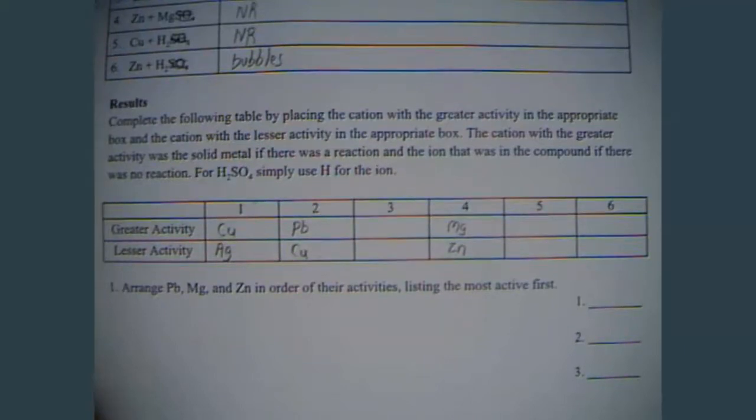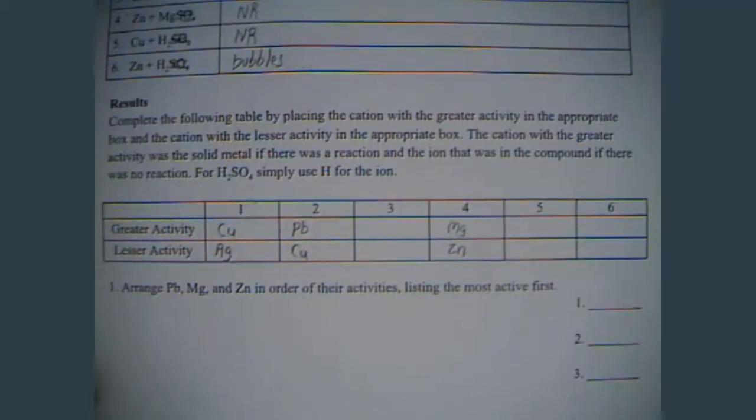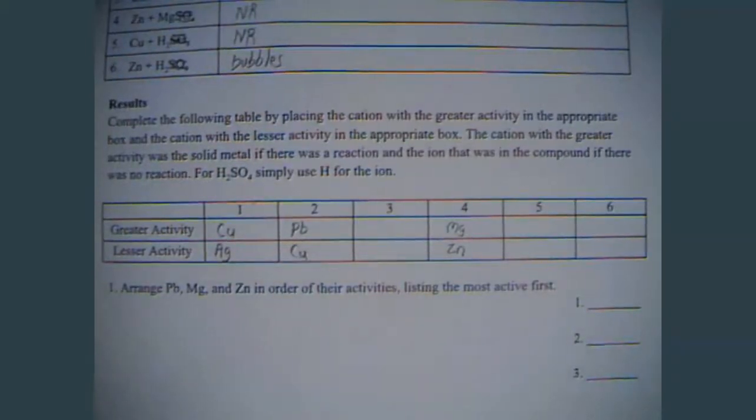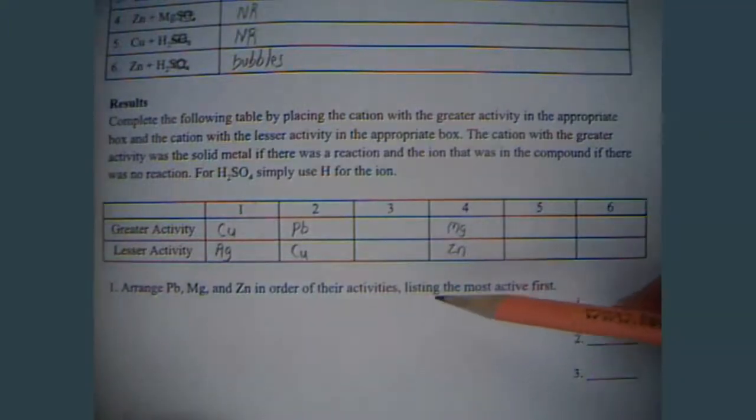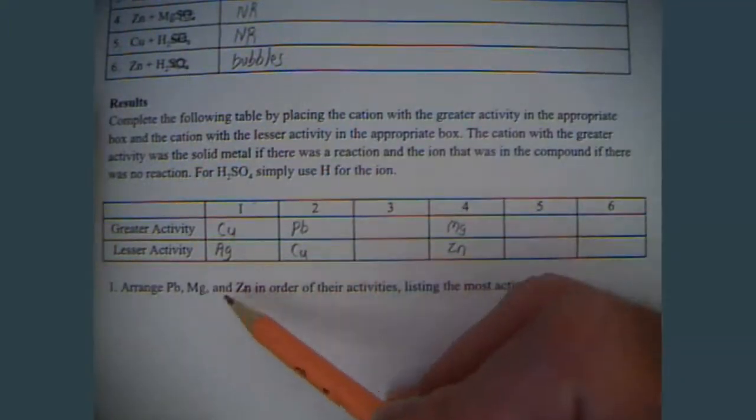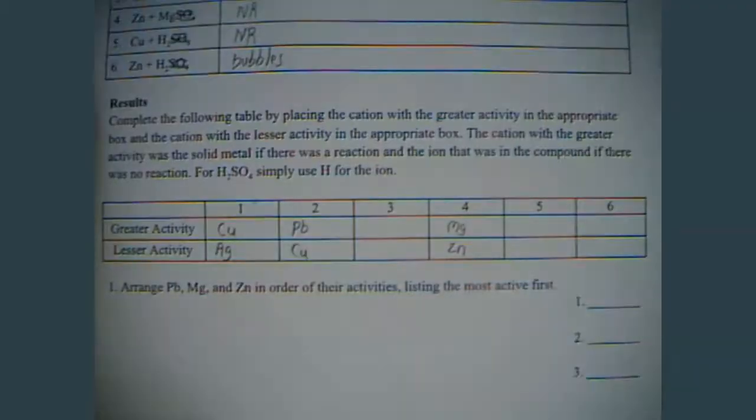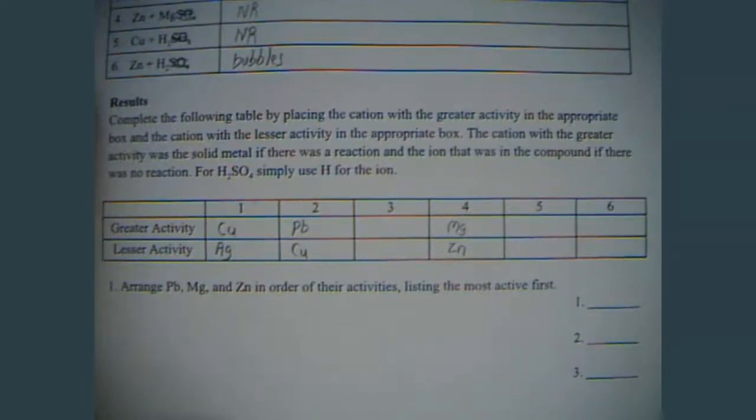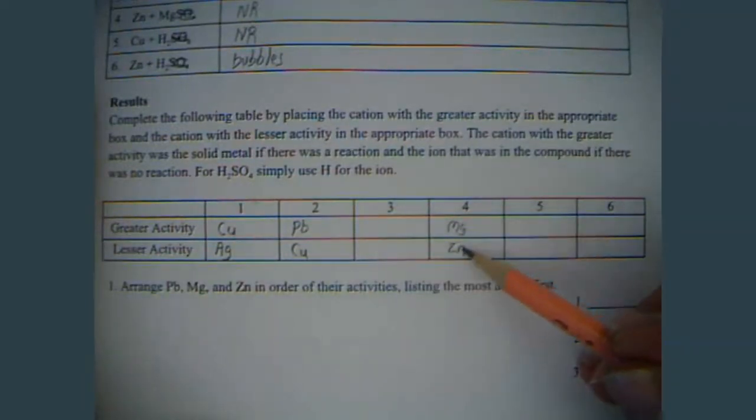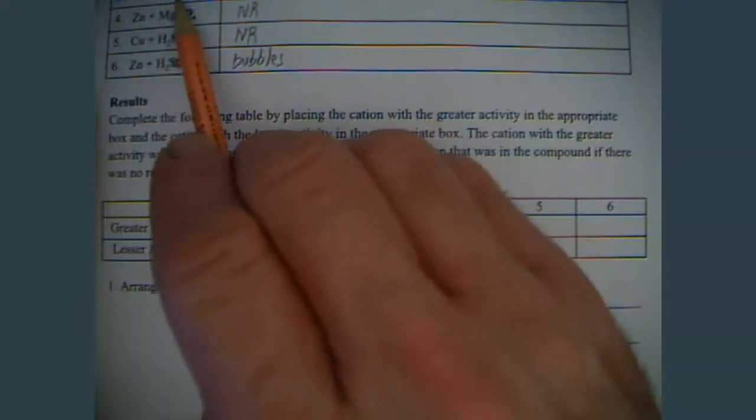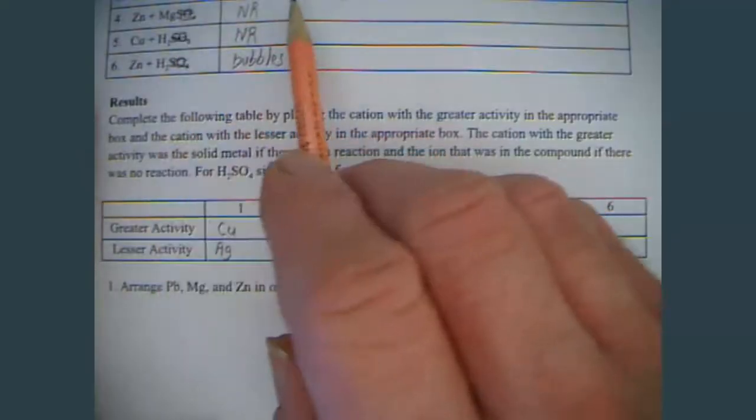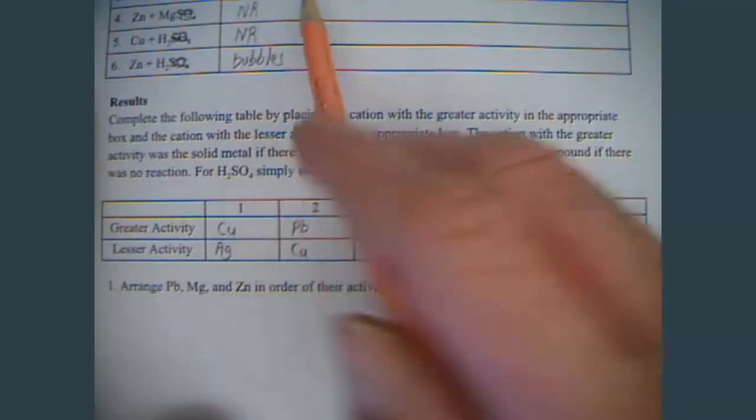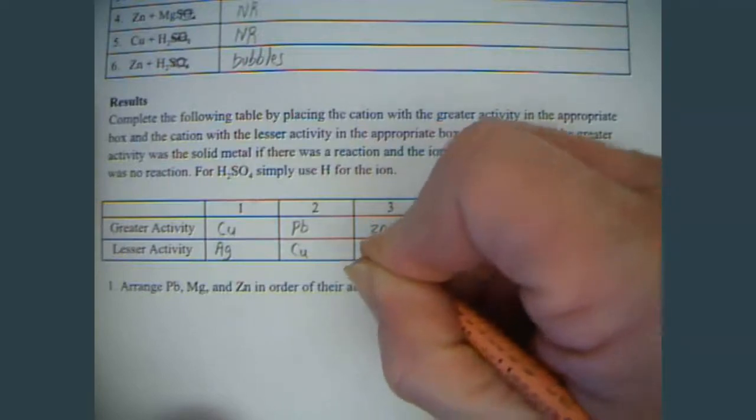Now, arrange lead, magnesium, and zinc in order of their activities, listing the most reactive first. And so, this is kind of like how you're figuring out teams when you're seeding for a tournament. For instance, if you have 3 football teams and this team and this team played each other, but this team didn't play that team, and you're trying to put them in order of how you think that they're going to go. Well, magnesium beat zinc. And then, we have to see where the zinc in number 3 here, if the zinc won or the lead won.